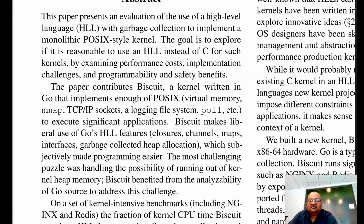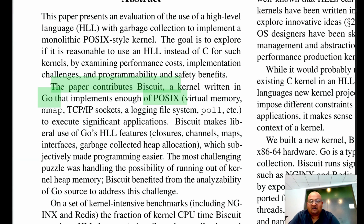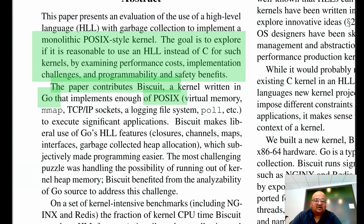The artifact this paper discusses is a kernel called Biscuit, which was written in Go and implements a subset of POSIX, so it is a Unix-like operating system. The goal was not really to innovate along architectural lines, but instead to gauge the pros and cons of using a modern high-level language for writing an operating system kernel, as opposed to using a language like C.